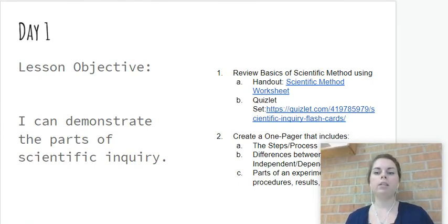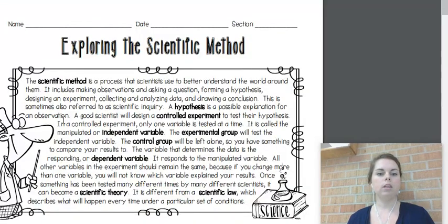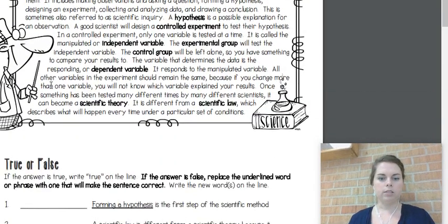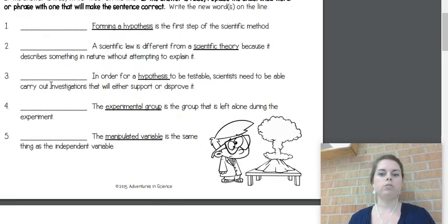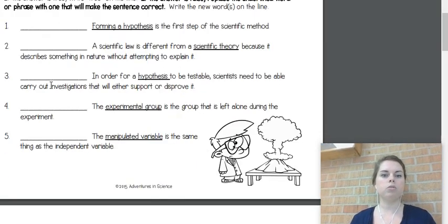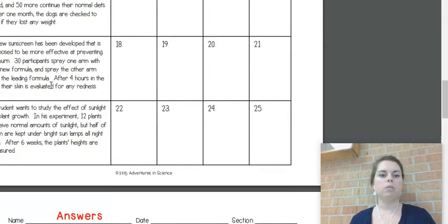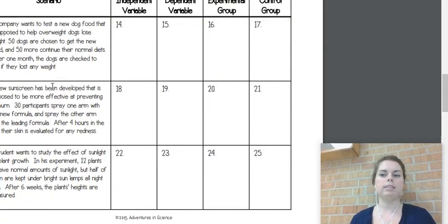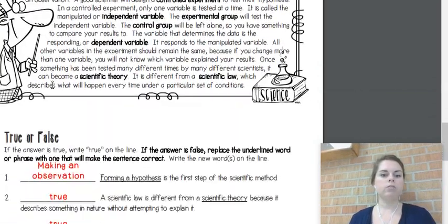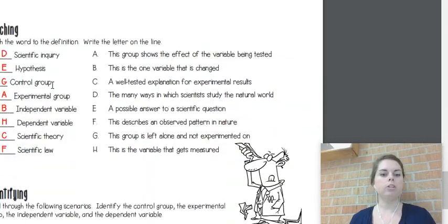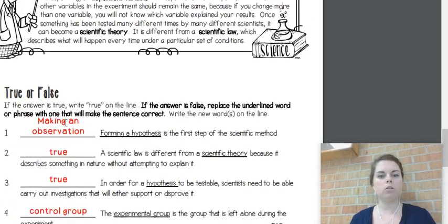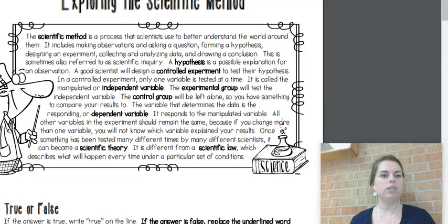We have a couple activities to do that. The first is this handout that says Scientific Method Worksheet. This has some information in case you've forgotten the scientific method. It also has review questions so you can test your knowledge with true/false, matching, and picking out different types of variables. We did include the answers, so if you're working at home you can check if you're correct. But make sure you try to answer them before you check the answer key.